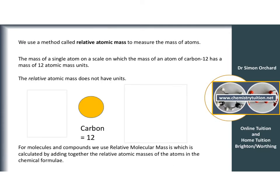The proper name for this relative scale for atoms is, funnily enough, relative atomic mass. We define this by taking the carbon-12 isotope, which has six protons and six neutrons. The 12 refers to the mass number. We compare all other atoms against the mass of that atom, and say that carbon-12 has a mass of 12 atomic mass units.